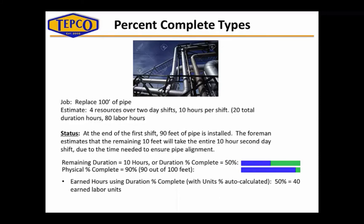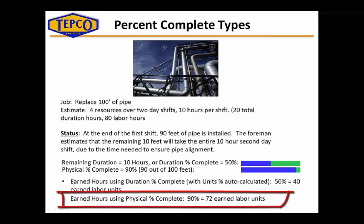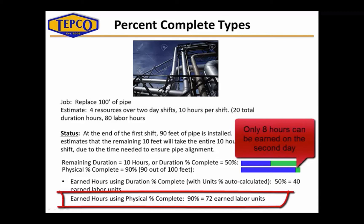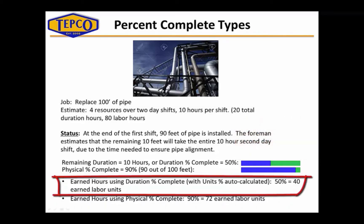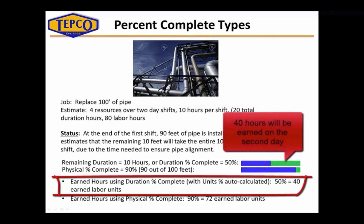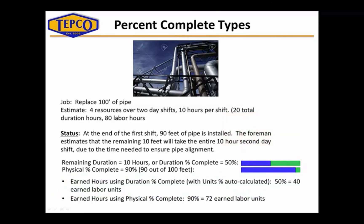So what does this do to our earned value? Using duration percent complete — at 50% complete — they earned 40 man hours. If we use physical percent complete at 90%, they have earned 72 man hours. If physical percent complete is 90%, they've earned 72 labor units, meaning on the second shift they can only earn another 8 hours. If duration percent complete is used at 50%, they've earned 40 man hours so far, meaning on the second shift they can still earn the other 40 hours. So you need to ask yourself which one makes more sense — in this instance, using duration percent complete would appear to make more sense.